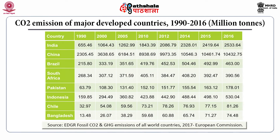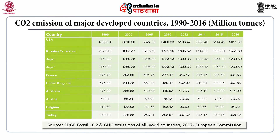This table shows the carbon dioxide emission from major developing countries during 1990 to 2016. China holds the topmost rank with 10,432 million tons, and India with 2,533 million tons in 2016. Another table shows carbon dioxide emission of major developed countries during the same period — the USA emitting at 5,011 million tons. In comparison, developed countries are emitting somewhat more carbon dioxide on a per-country basis.